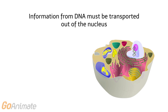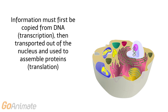The information from DNA must be transported out of the nucleus. Information is first copied from DNA in a process known as transcription, and then transported out of the nucleus where it is used to assemble proteins in a process known as translation.